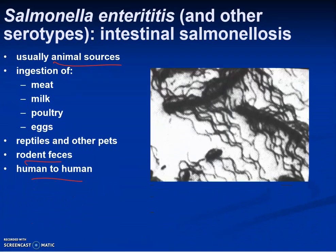Let's move on to Salmonella Enteritidis and other serovars causing intestinal salmonellosis. There are usually animal sources, and infections are due to ingestion of meat, milk, poultry, and eggs — chicken takes a lot of the blame. Salmonella is often found on the surface of eggs and in poultry. Reptiles, rodent feces, and human-to-human transmission are also sources.